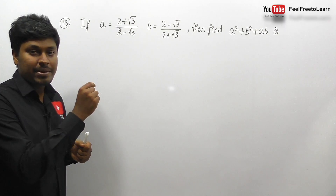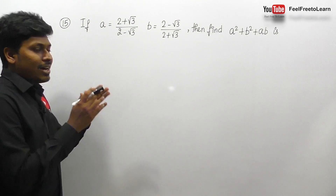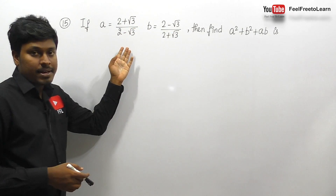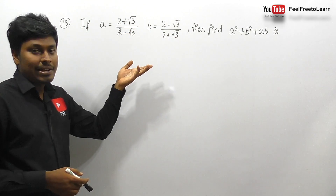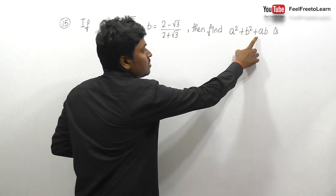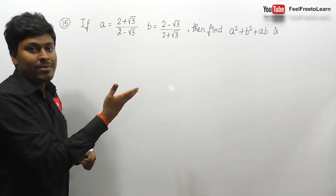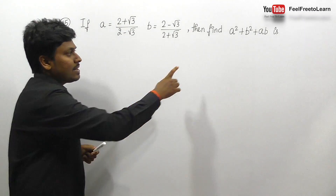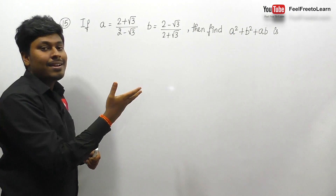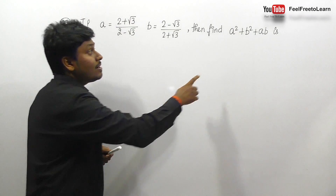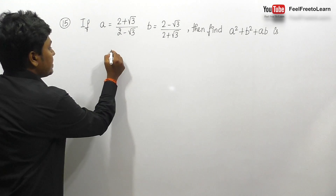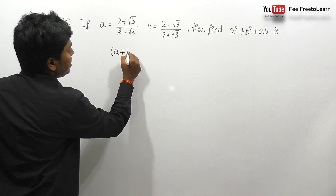If you are brilliant you can directly substitute the values of a and b and square them. But my method is: if we had 2ab we could use the formula (a+b)², but here we have only +ab, not 2ab.